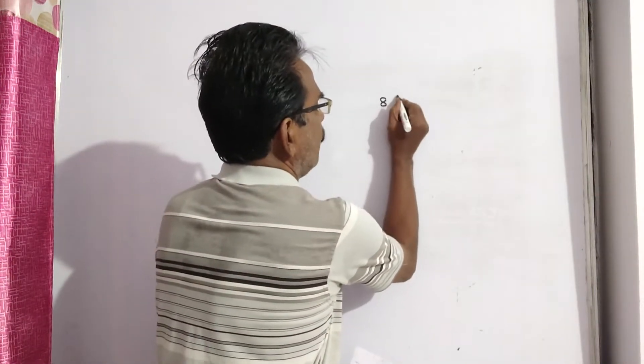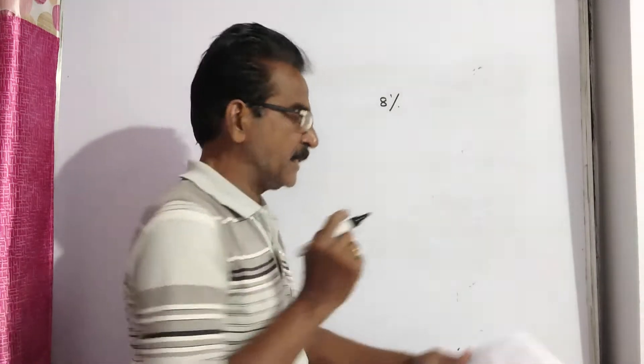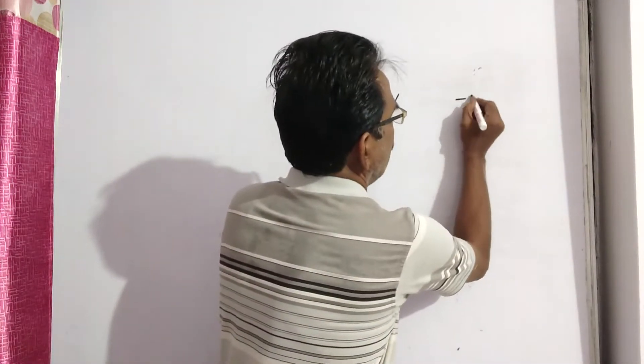Some articles are sold at 8% profit. Hence, this problem also can be solved by applying rule of allegation. Some articles are sold at a profit of 8% and remaining at 12% loss.